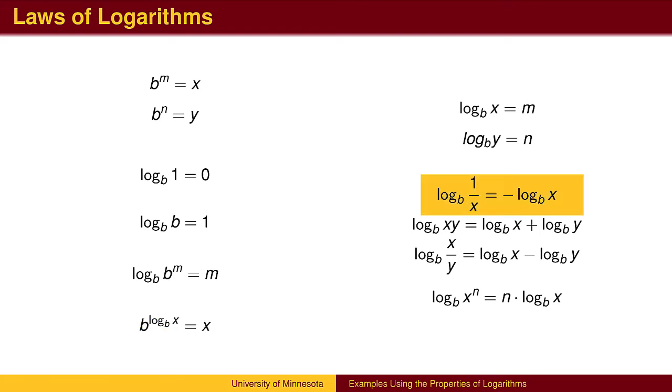A negative exponent takes the reciprocal of the number. Adding exponents corresponds to multiplying numbers. Subtracting exponents corresponds to dividing numbers. Raising a power to a power corresponds to multiplying exponents.